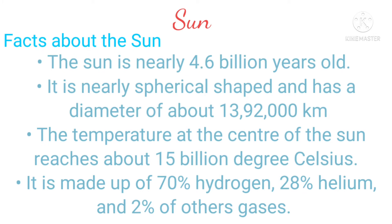Here are some facts about the sun. The sun is nearly 4.6 billion years old. It is nearly spherical in shape and has a diameter of about 1,392,000 kilometers. The temperature at the center of the sun reaches about 15 billion degrees Celsius. It is made of 70 percent hydrogen, 28 percent helium, and 2 percent other gases.